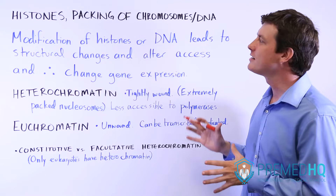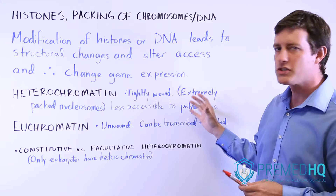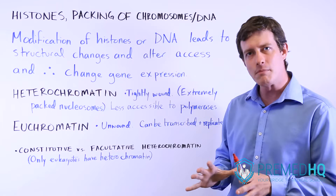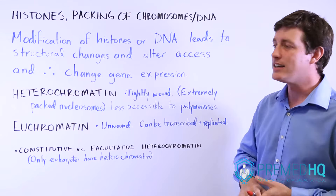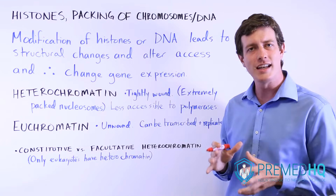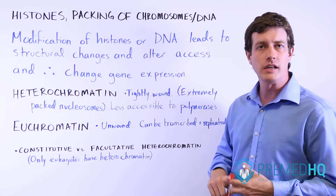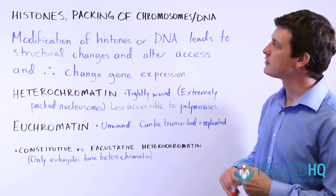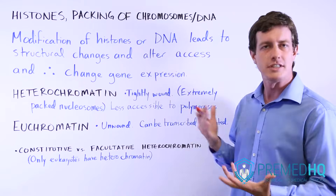As mentioned, histones and nucleosomes are both a solution to how to fit a large amount of DNA into a much smaller nucleus. But they present their own set of problems: if you have very tightly coiled and tightly wound DNA, it is very difficult for it to be replicated and expressed via transcription and translation. And to that end, there's a lot of regulation involved in the expression of this coiled DNA.